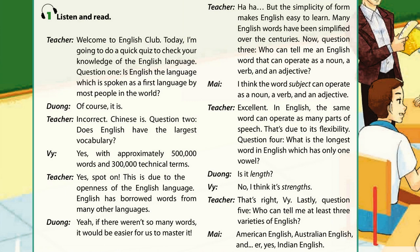That's right. Lastly, question 5: Who can tell me at least three varieties of English? American English, Australian English and Indian English.